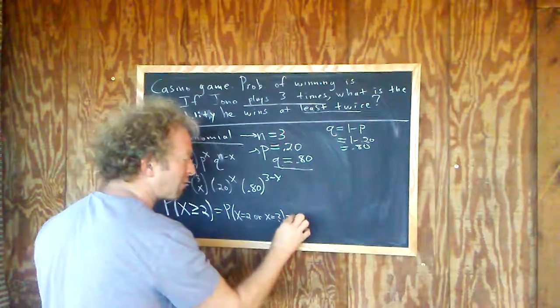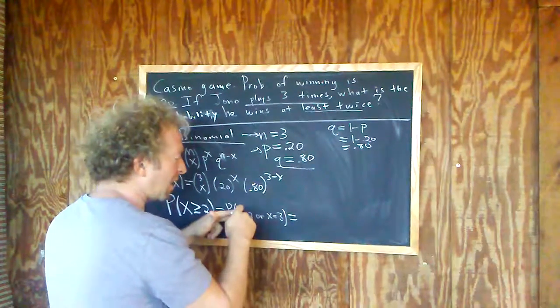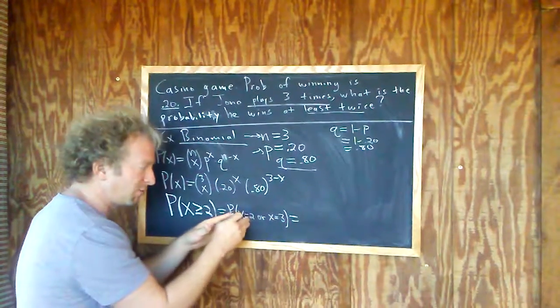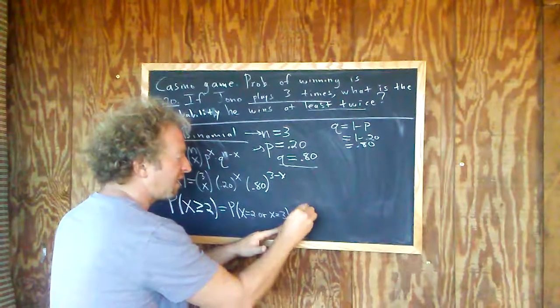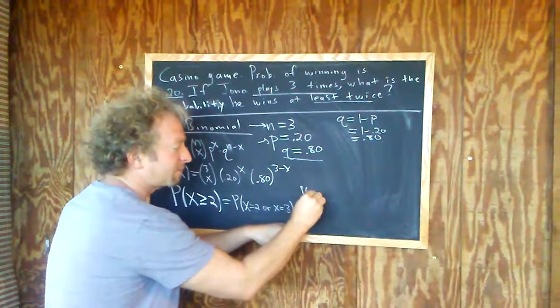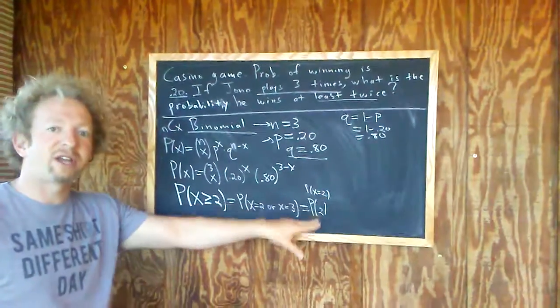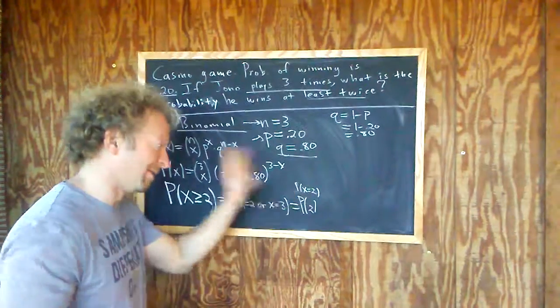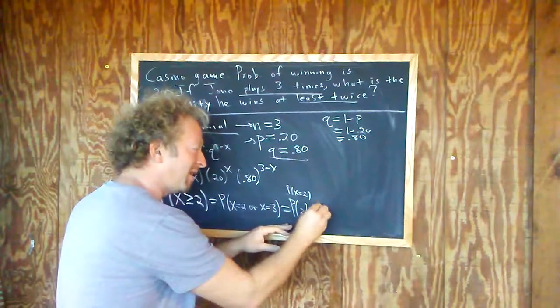All right. When there's an or, you add. And you're also supposed to subtract. But he can't win exactly twice and exactly three times. So it's just going to be P of two plus P of three. So this is P of two. Now, this means P of X equals two. That's what this means. This is just shorthand. It took me a year to learn that.